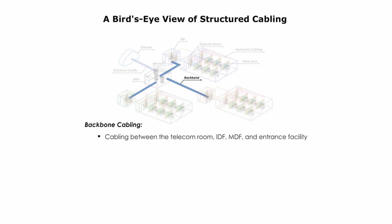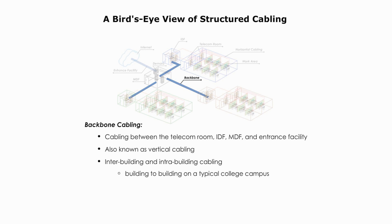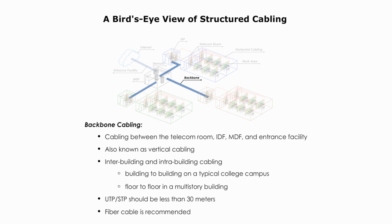Backbone cabling refers to the cabling between the telecom room, IDF, MDF, and entrance facility. It's also known as vertical cabling. It can be inter-building and intra-building cabling — for example, from building to building on a typical college campus, or from floor to floor in a multi-story building. If UTP or STP is used as backbone cabling, it should be less than 30 meters. But fiber optic cabling, multimode or single mode, is recommended nowadays.